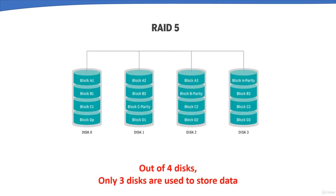RAID 5 is the most common secure RAID level, requiring at least three drives and working with up to 16. Data blocks are striped across drives, and on one drive a parity checksum of all block data is written. Using four drives — disk 0, 1, 2, and 3 — three are used to store data blocks and the fourth stores parity data. The parity data is spread across all drives rather than fixed to one drive.